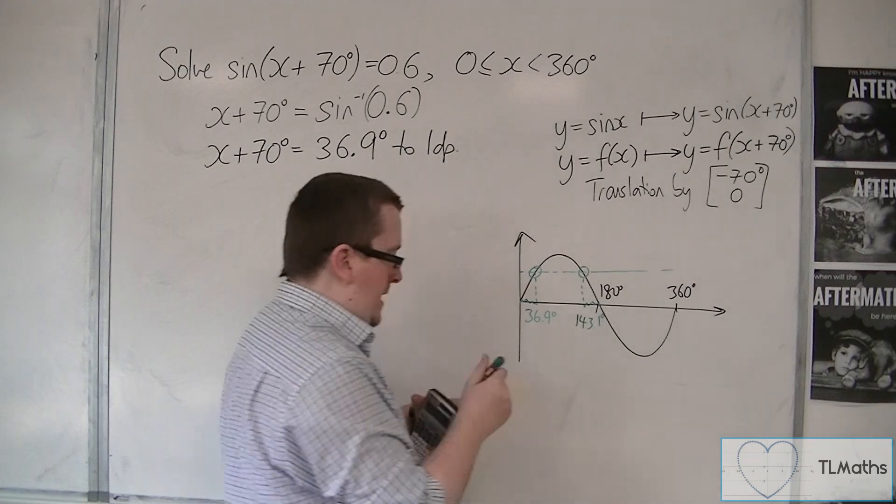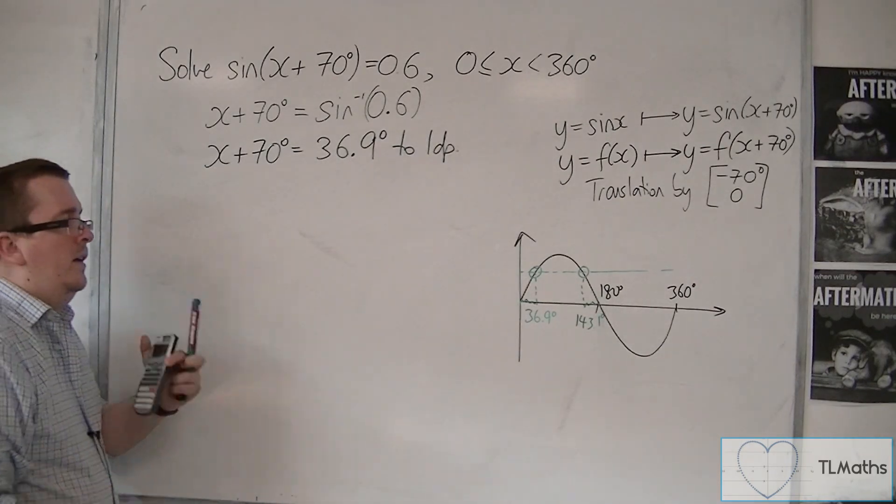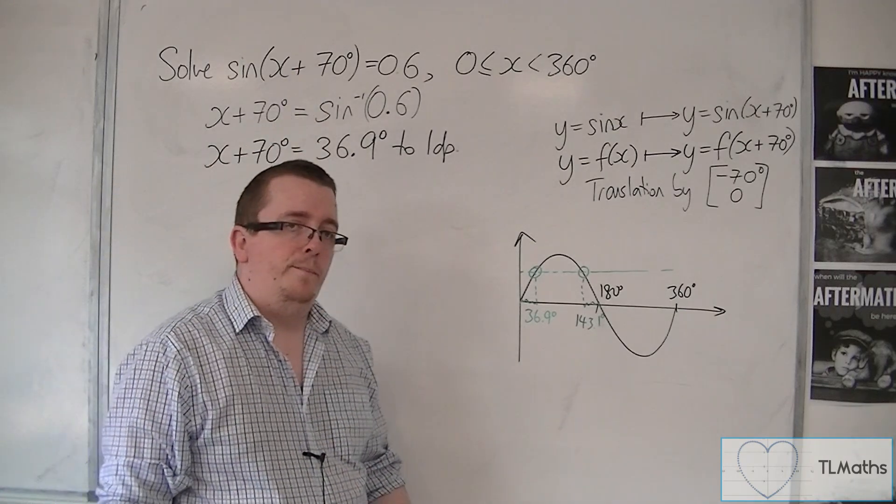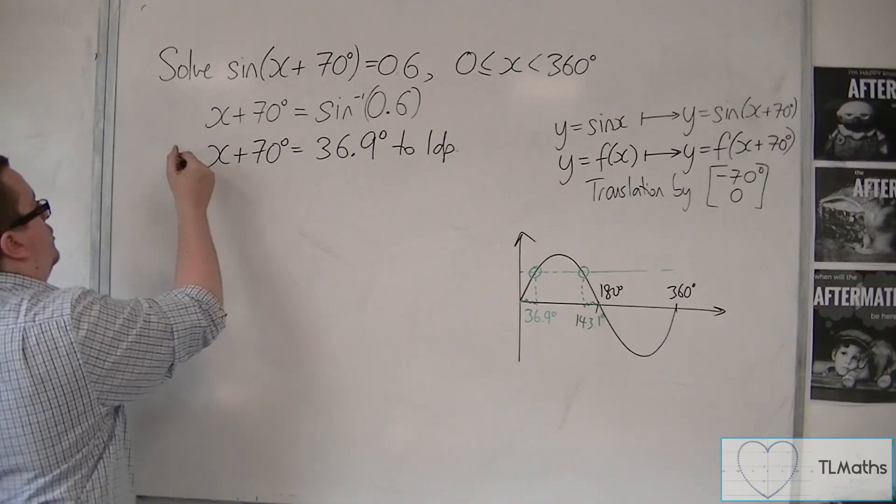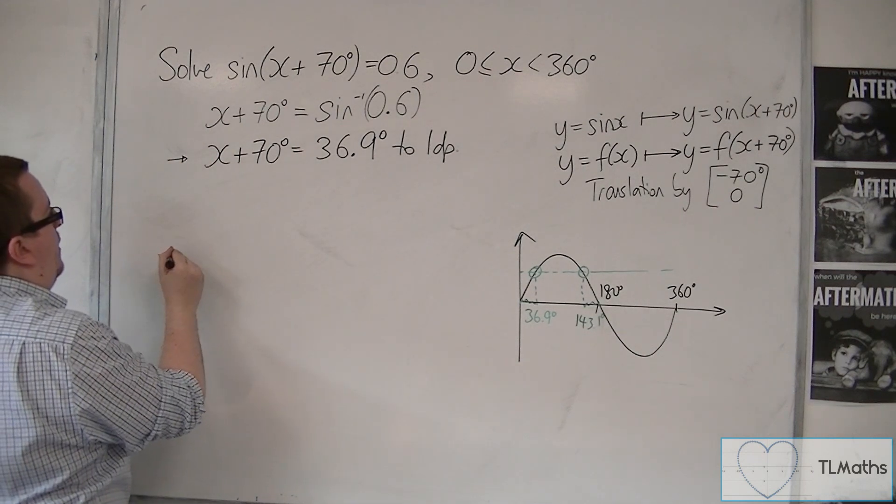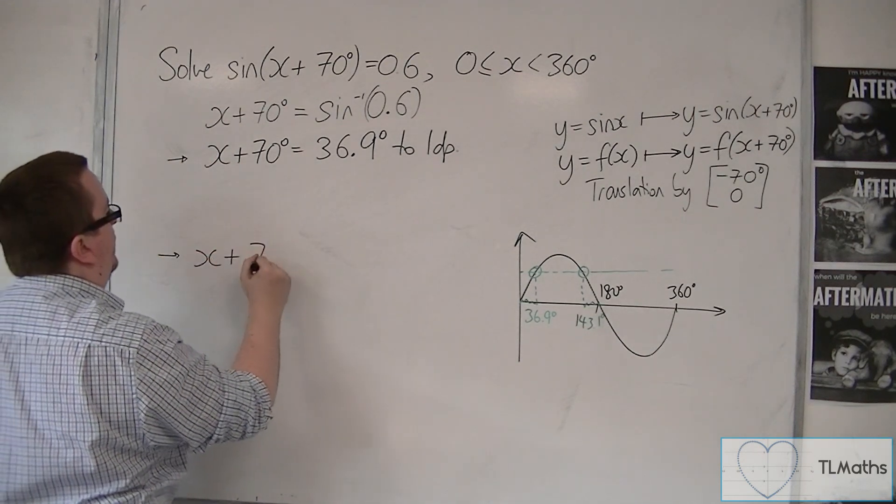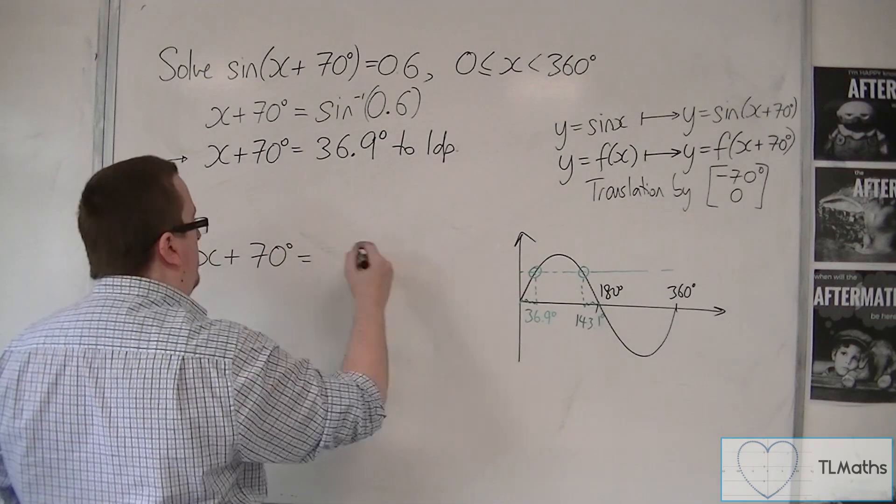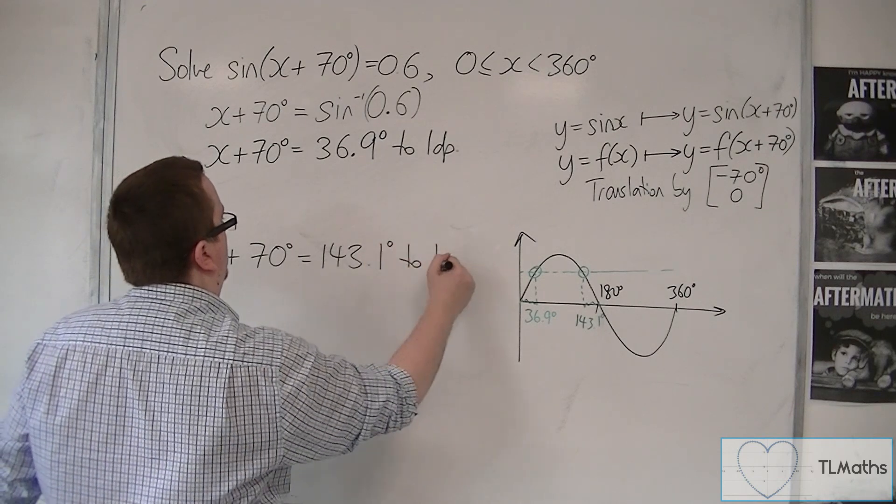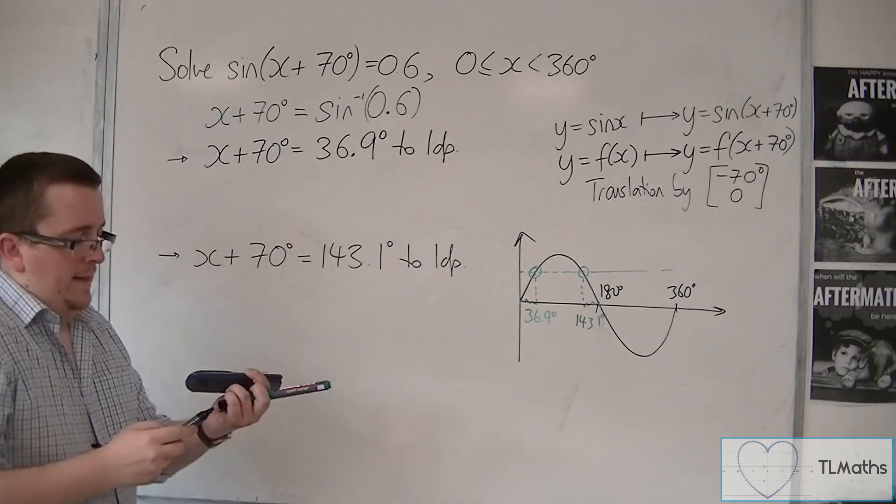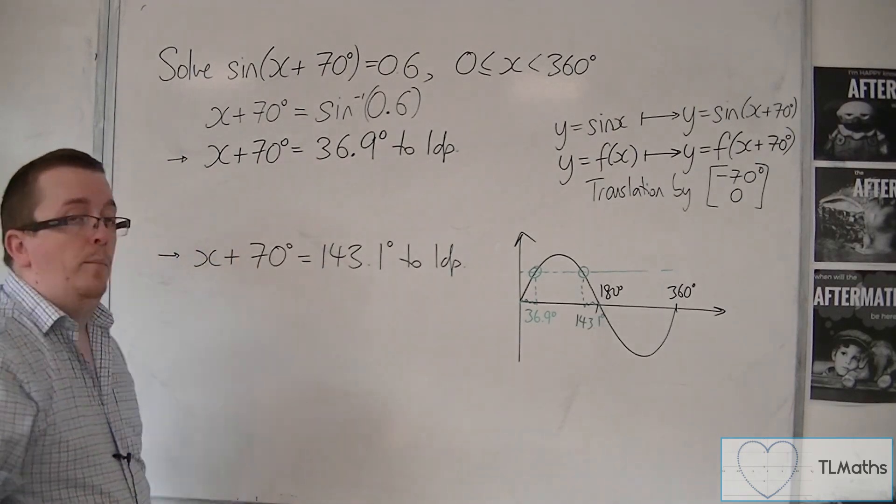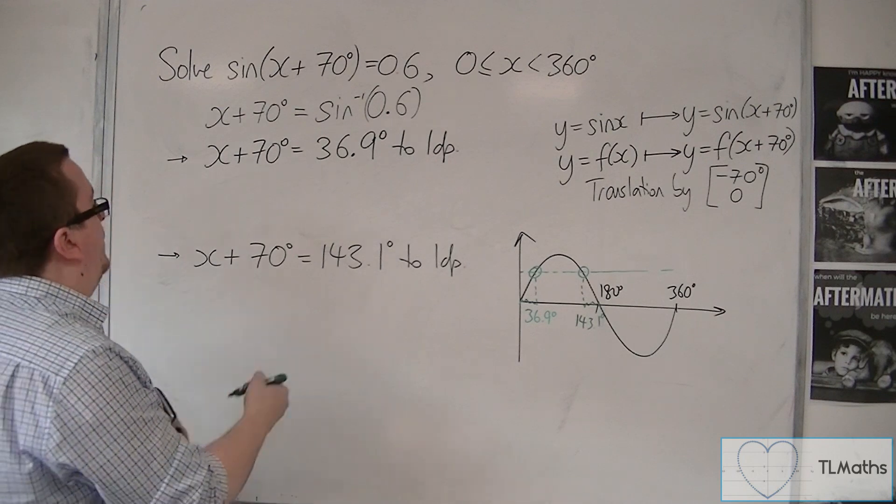Now, these are not the solutions to that original problem. In actual fact, I have this equation, and I now have this equation. So, I put the x plus 70 equal to the second number that I found. And at last, I then solve these two equations by subtracting 70 from both sides.